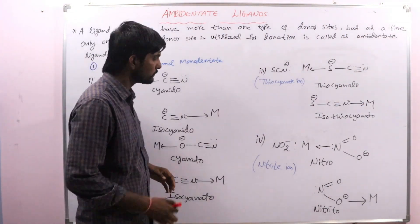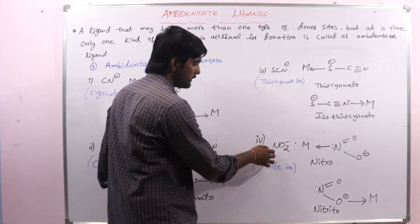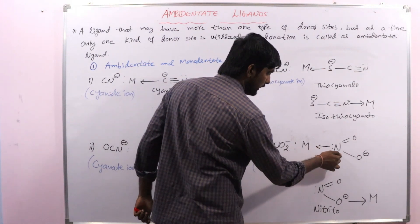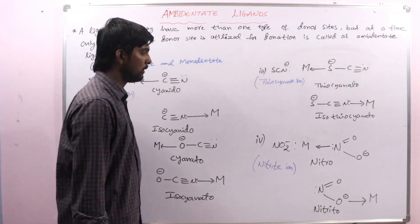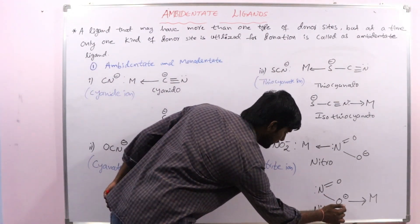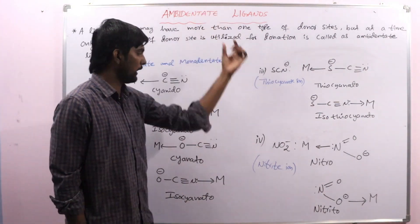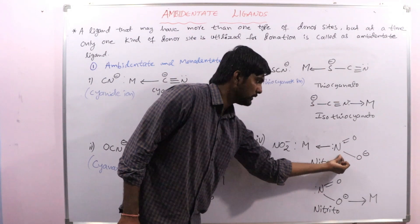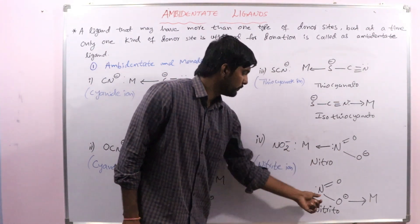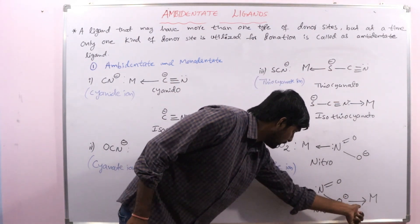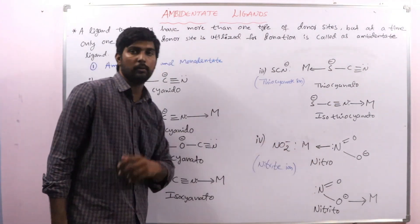Next one is the nitrite ion, NO₂⁻. In the nitrite ion, if nitrogen is the donor atom, then that is nitro. If oxygen is the donor atom, then that is nitrito. So: nitro — nitrogen is forming bond with the central metal atom; nitrito — oxygen is forming bond with the central metal atom.